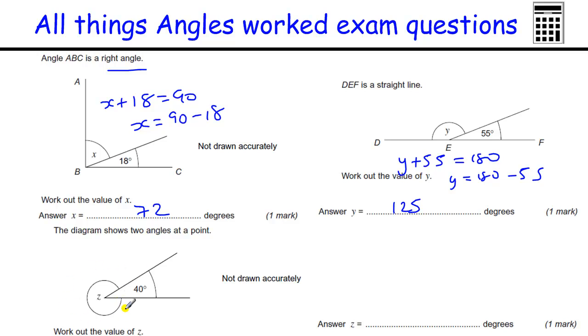Here we've got angles around a point. The angles around a point all the way around add to 360. So we've got Z plus 40 equals 360, so Z equals 360 take away 40, and that's 320.